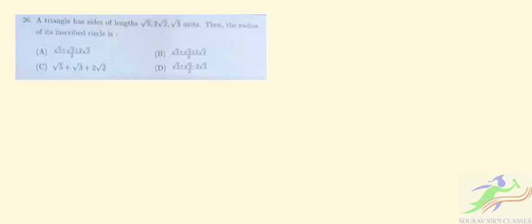Hello students, welcome to Shortcut Sir Classes. This question is from ISI 2022 paper of the Stat/Math paper, code UGA. Question number 26 is saying that a triangle has sides of length root 5, root 2, root 3 units.